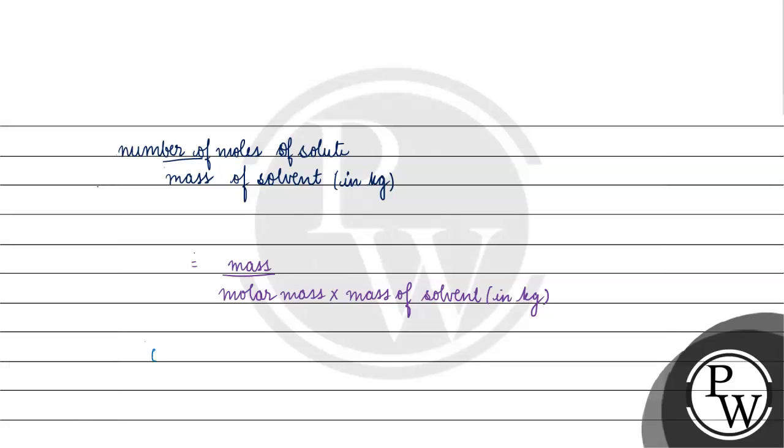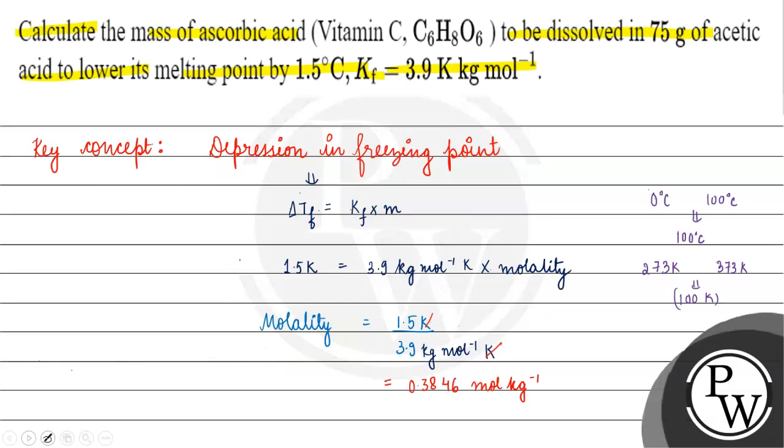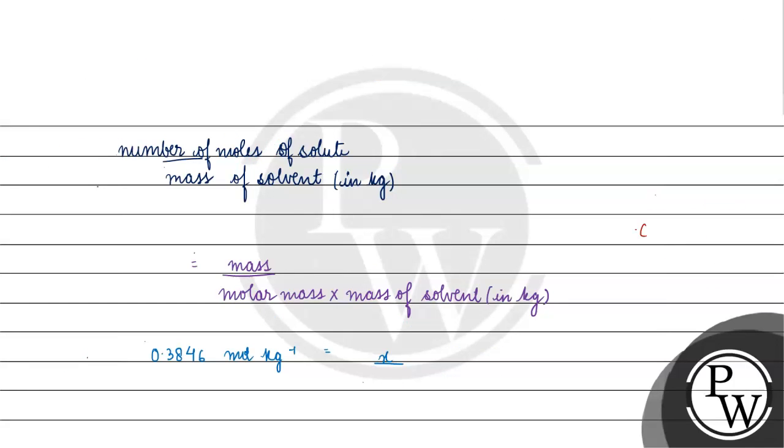We know molality is 0.3846 moles per kilogram. Mass of solute is x. The molar mass of ascorbic acid, C₆H₈O₆, needs to be calculated.